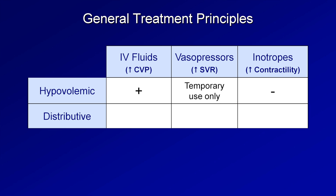In distributive shock, the primary derangement is low SVR, so vasopressors are almost always necessary. Since most of these patients are also hypovolemic, or at the very least have their fluid maldistributed to the periphery rather than in the central circulation, IV fluids are used in every case. And because of the sepsis-induced cardiomyopathy, some patients with sepsis may also benefit from inotropes, but identifying those patients can be a little tricky.